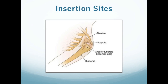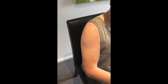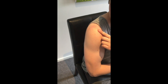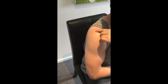EZIO recommends three sites of insertion, all of which have their respective pros and cons. The proximal humerus is a site that is close to the heart, meaning that any drugs administered are circulated quickly. It can be quite a difficult spot to locate, however, especially in larger patients. The insertion site is located by placing the patient's hand on their abdomen, thus exposing the greater tubercle.